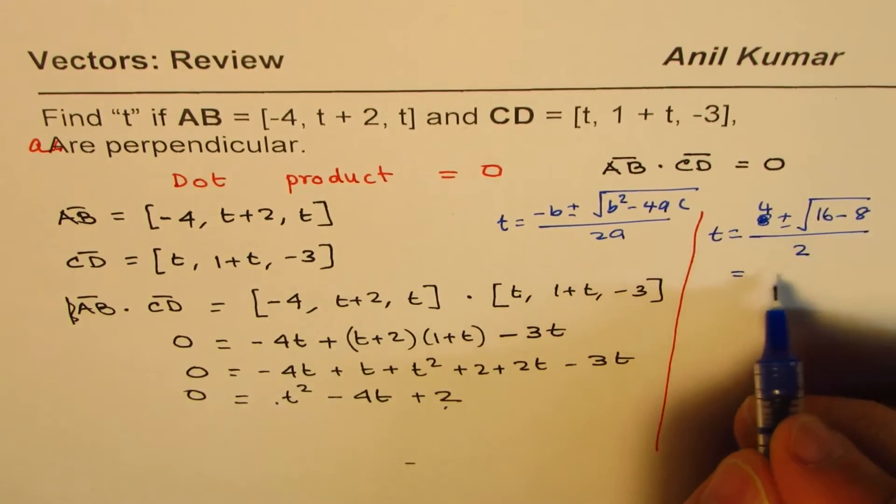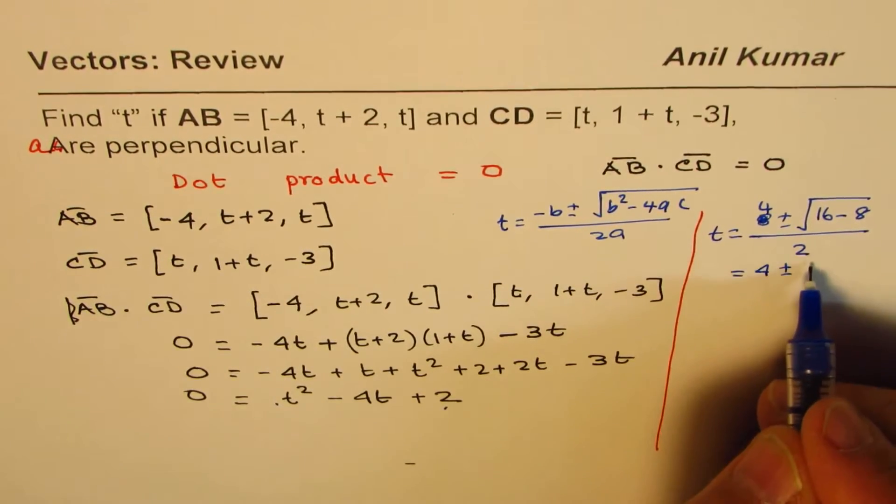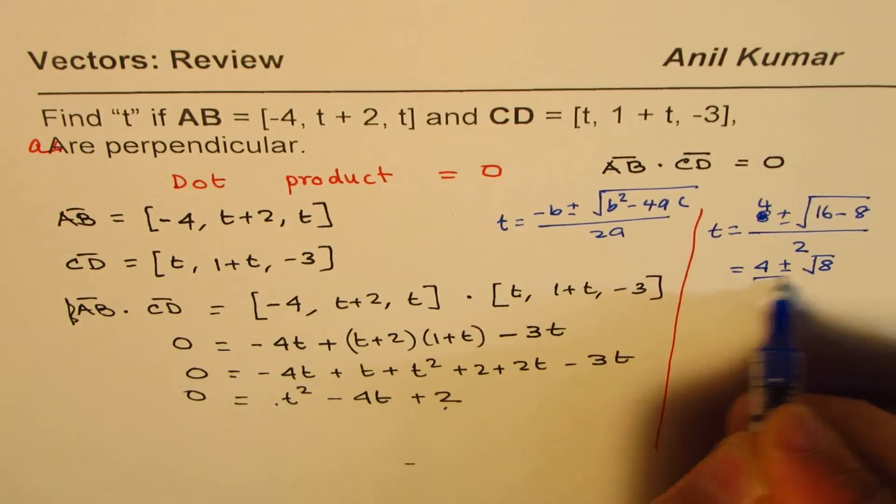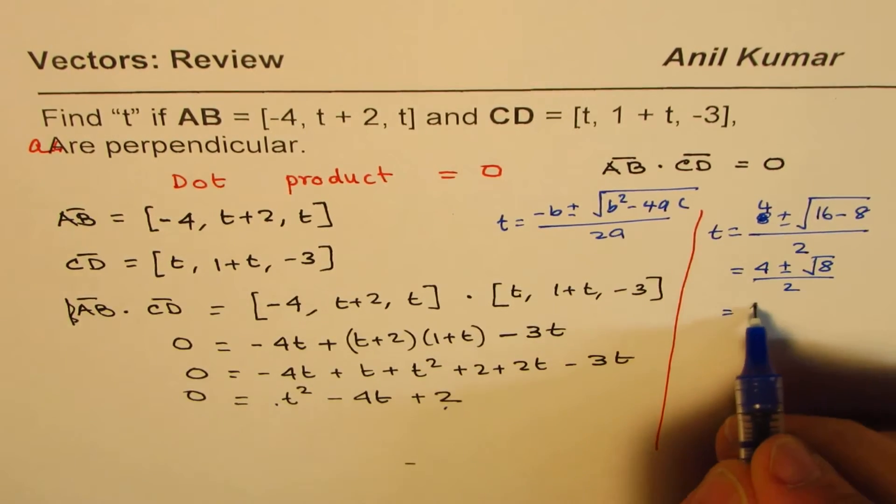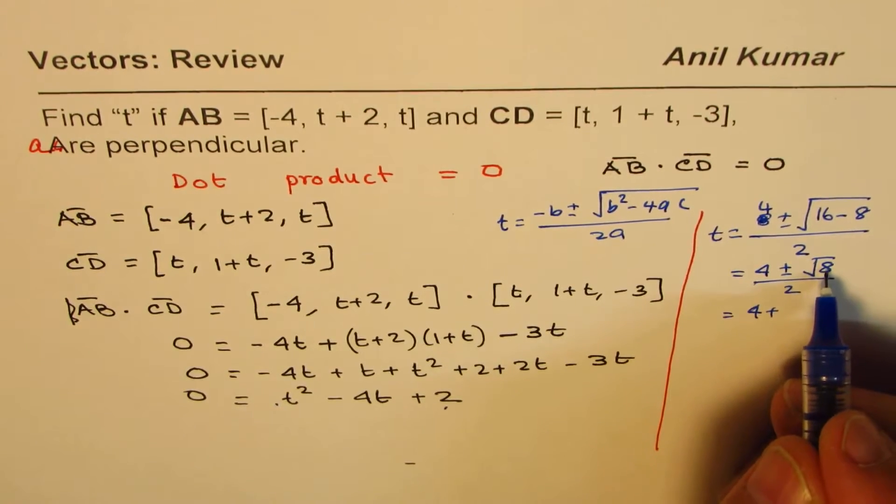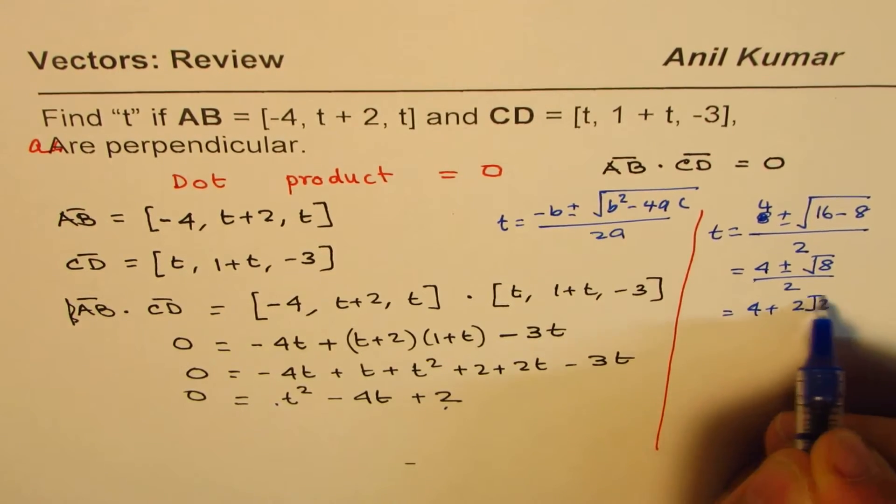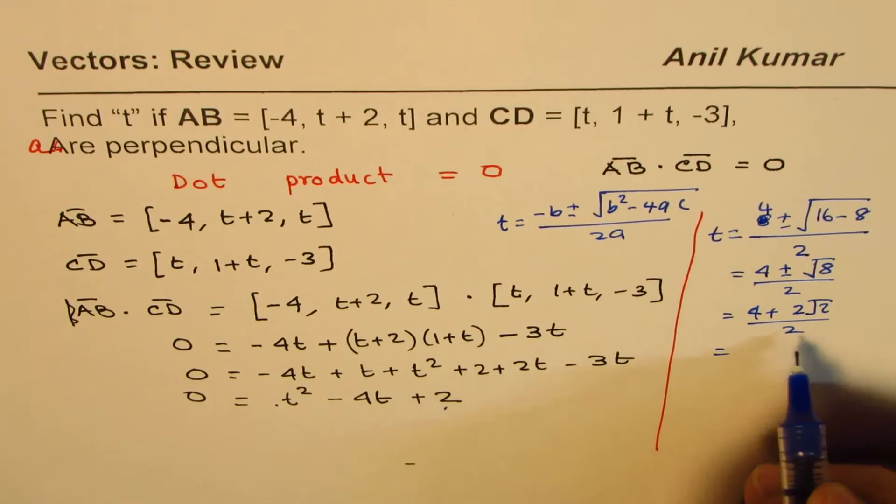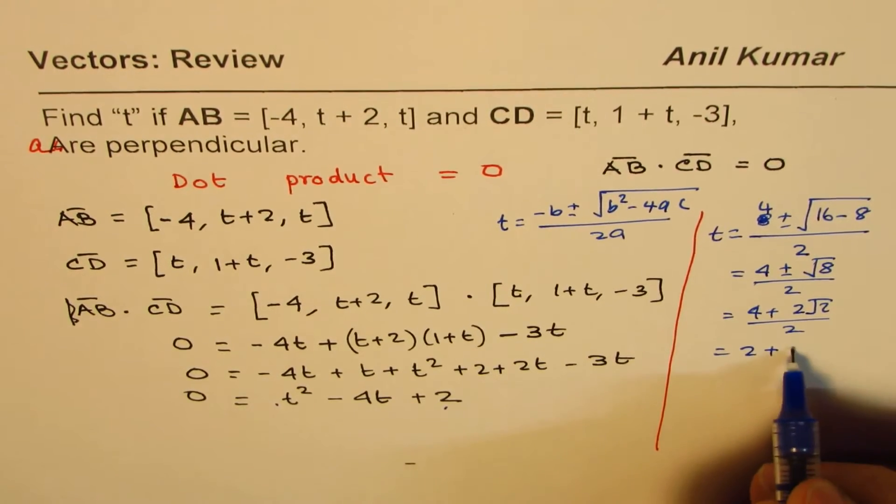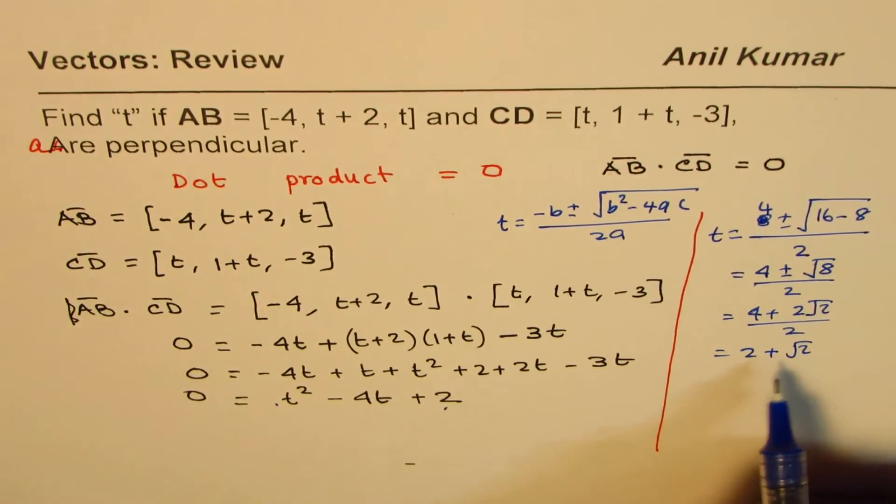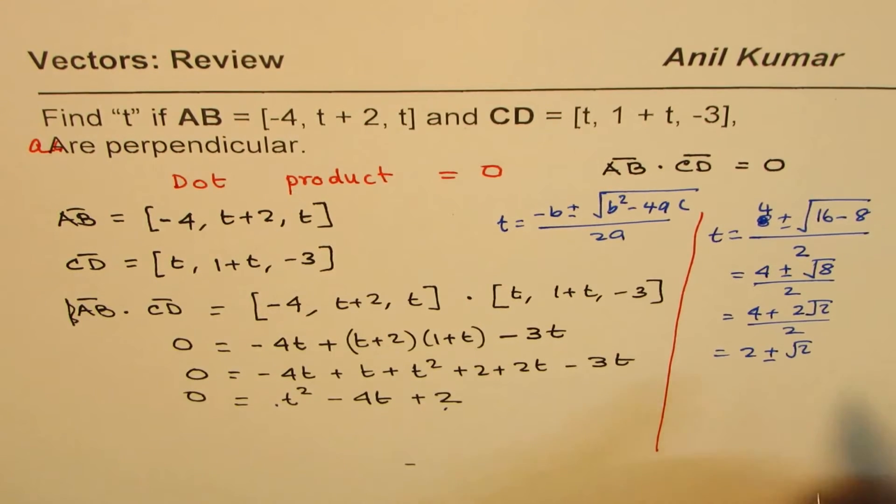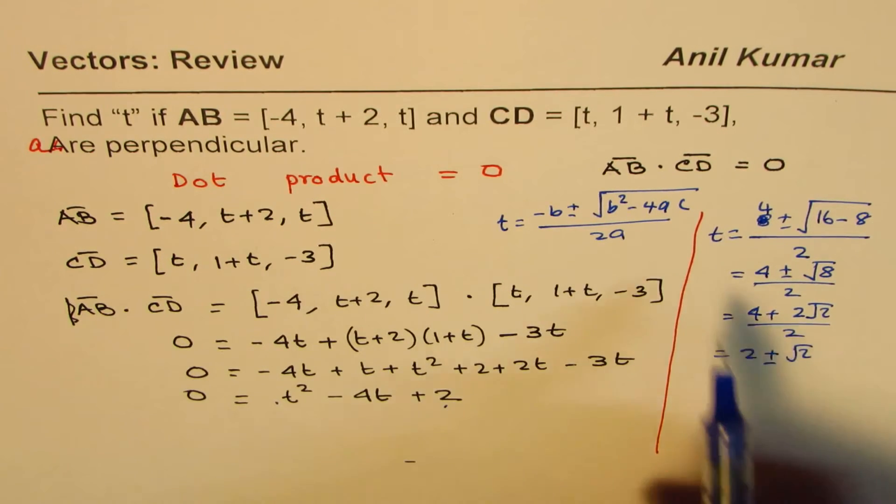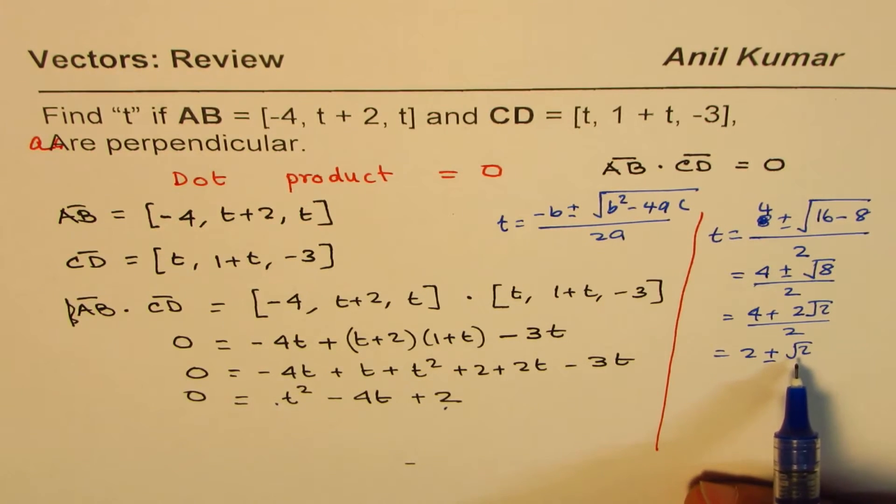So, that gives you 4 plus minus square root of 8 divided by 2. And 4 plus minus, this could be written as 2 square root of 2 divided by 2 or it could be written 2 plus minus square root of 2. So, that could be the value of t. So, t is 2 plus minus square root of 2.